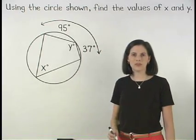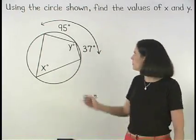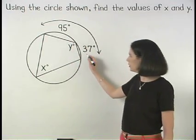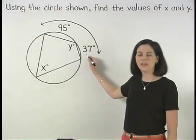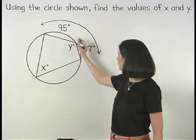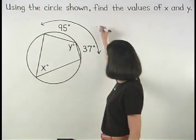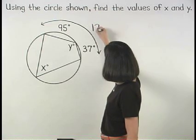Since we're given that the two parts of this arc measure 95 and 37 degrees, then the full arc measures 95 plus 37 or 132 degrees.